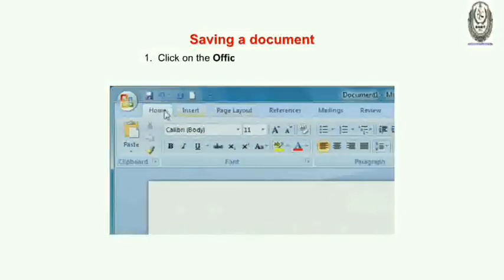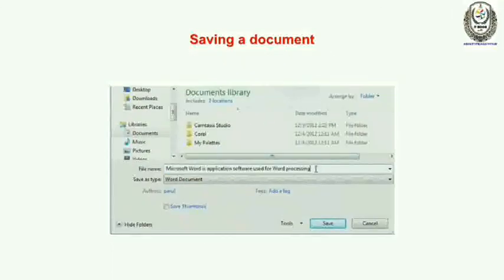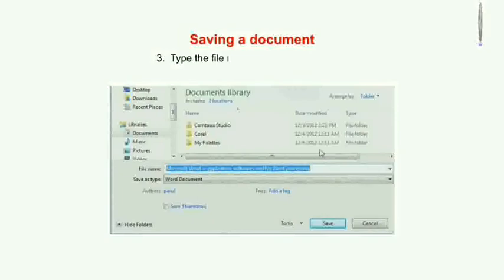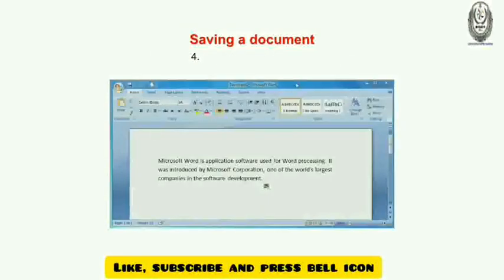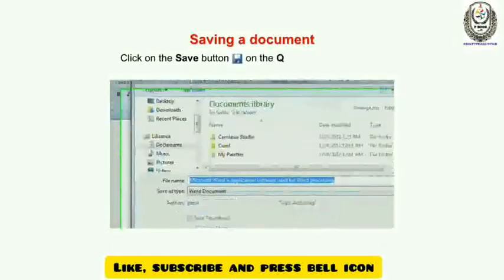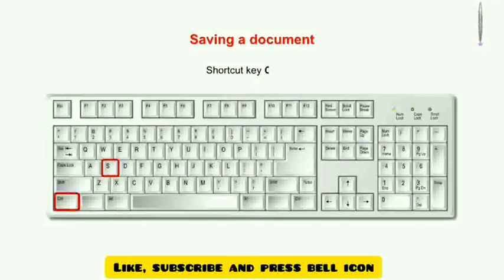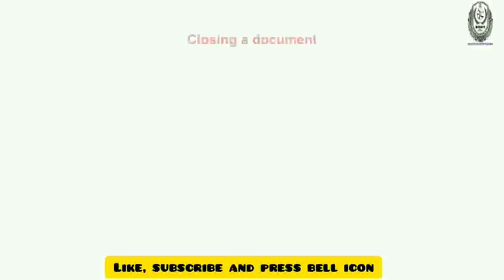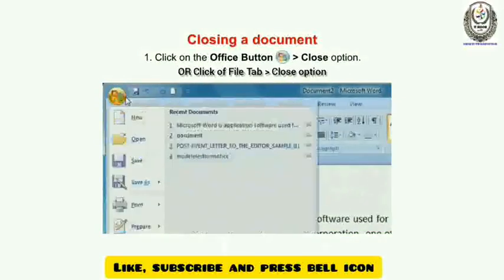Now let us learn how to save a document. Number one: click on the Office button or File button, then click on Save option. Number two: the Save As dialog box will appear. Number three: type the file name in the File Name box. Number four: click on the Save button. You can also click the Save button on the Quick Access Toolbar. The shortcut key is Ctrl + S.